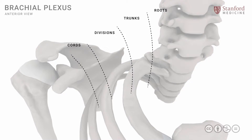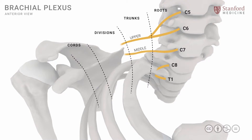There are typically five roots that participate in the formation of the brachial plexus: C5, C6, C7, C8, and T1. These five roots unite in a very specific pattern to result in the formation of three trunks. The C5 and C6 roots unite to form the upper trunk, the C7 root continues on its own to form the middle trunk, and the C8 and T1 roots unite to form the lower trunk. So from five roots, we end up with three trunks.